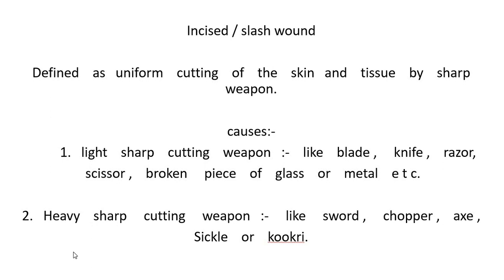Today we will learn about wounds caused by sharp weapons or objects. An incised wound is defined as uniform cutting of the skin and tissue by a sharp weapon. Causes include light sharp cutting weapons like blade, knife, razor, scissor, broken piece of glass or metal, and heavy sharp cutting weapons like sword, chopper, axe, sickle, or cleaver.